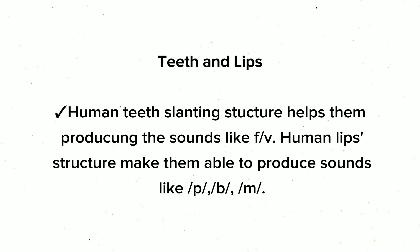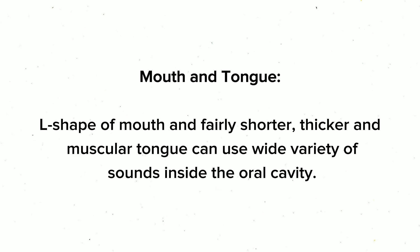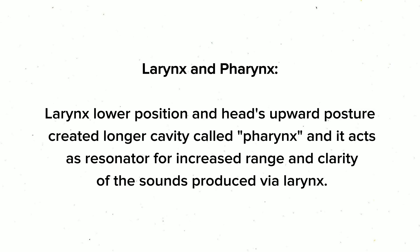Teeth and lips: human teeth slanting structure helps in producing sounds like 'f' or 'v'. Human lips structure makes them able to produce sounds like 'p', 'b', and 'm'. Mouth and tongue: the L-shape of the mouth and a fairly shorter, thicker, and muscular tongue can produce a wide variety of sounds inside the oral cavity.